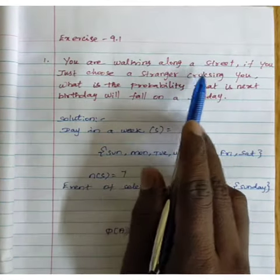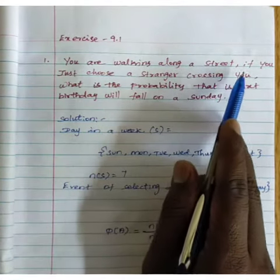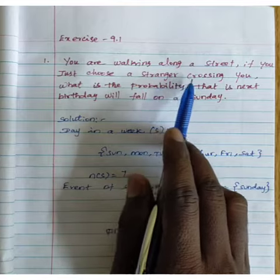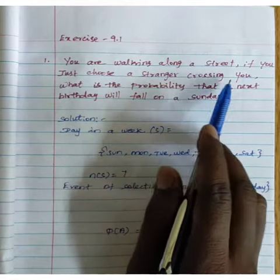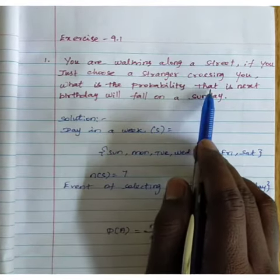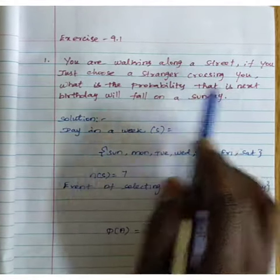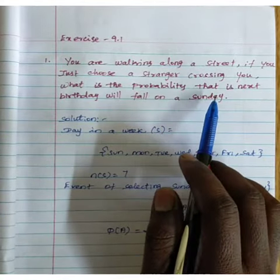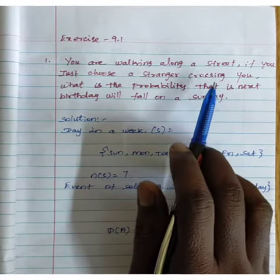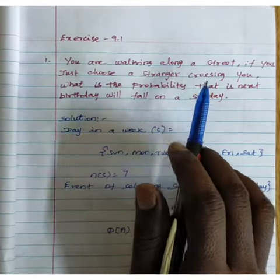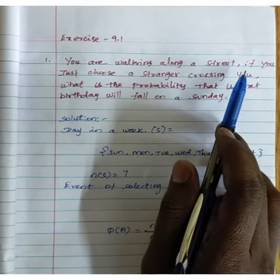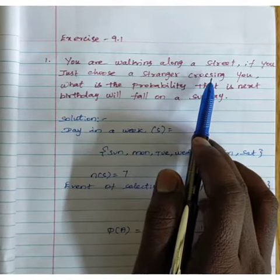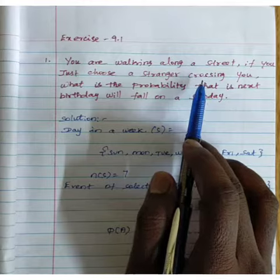You are walking along a street. If you just choose a day crossing you, what is the probability that the next day will fall on a Sunday? So first, if you go to a street, you will see a new person, and you will see a new person on Sunday.